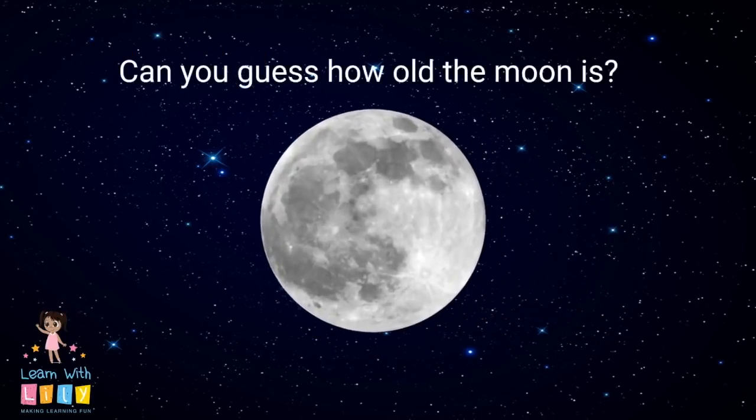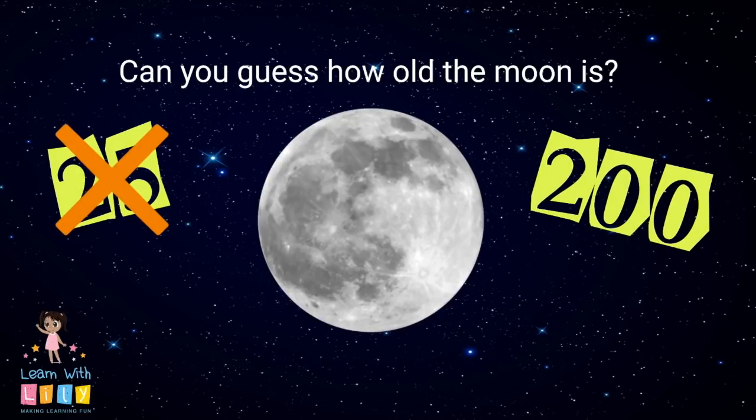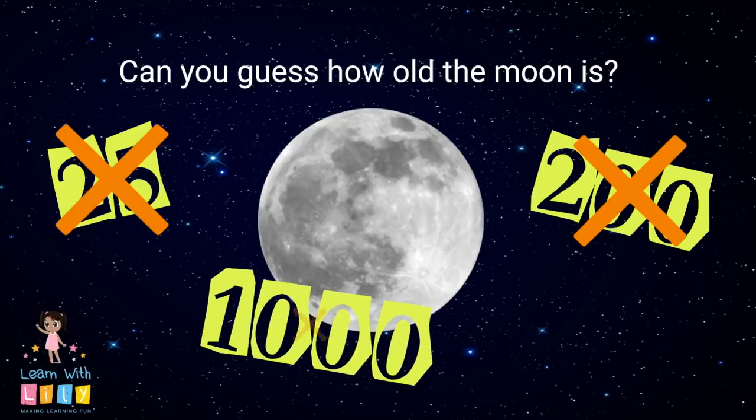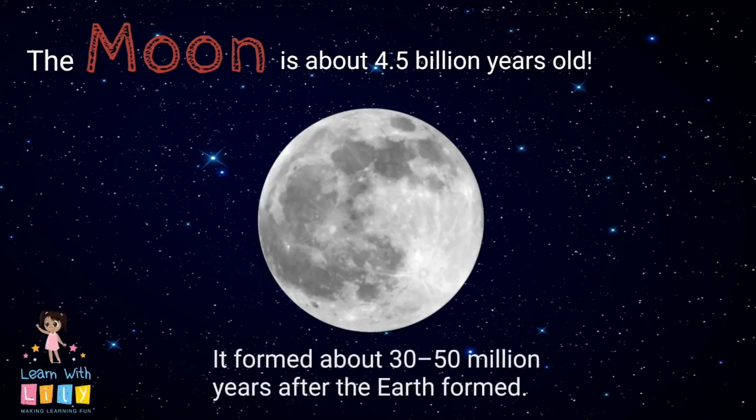Can you guess how old the Moon is? 25 years old? Nope. 200 years old? Nope. 1,000 years old? Nope. The Moon is about 4.5 billion years old. It formed 30 to 50 million years after the Earth formed.